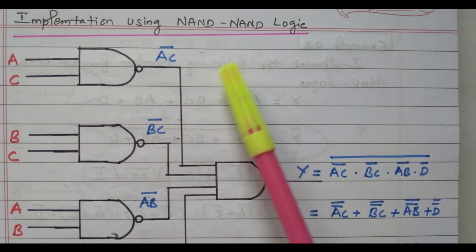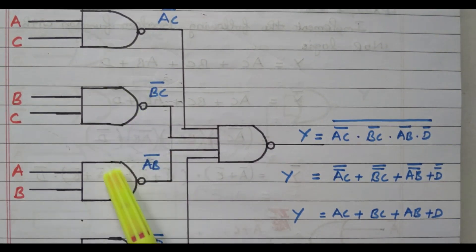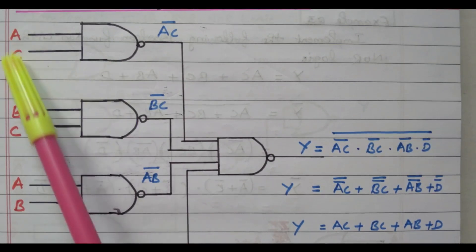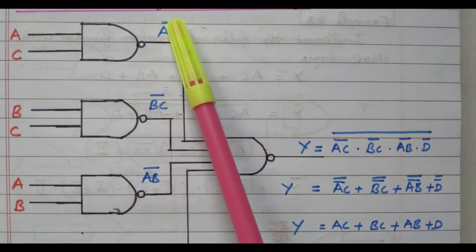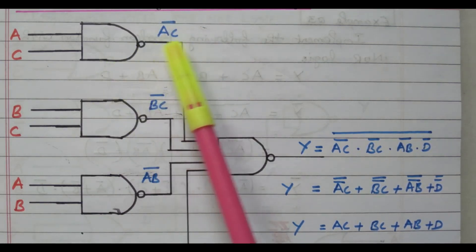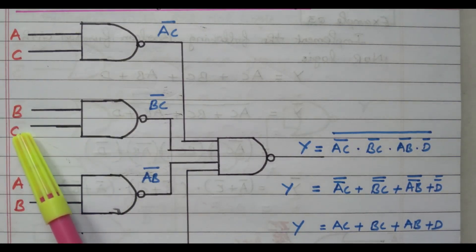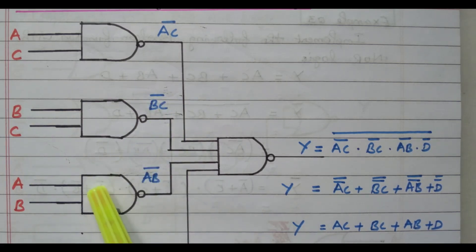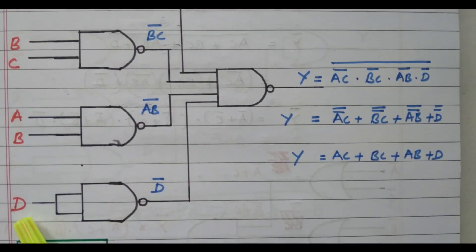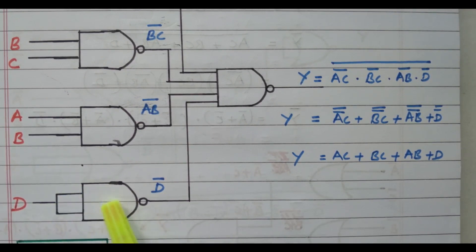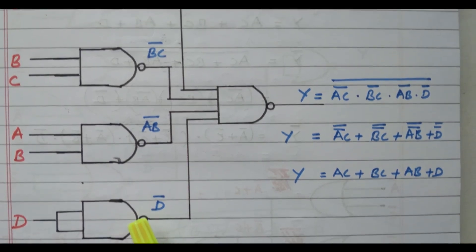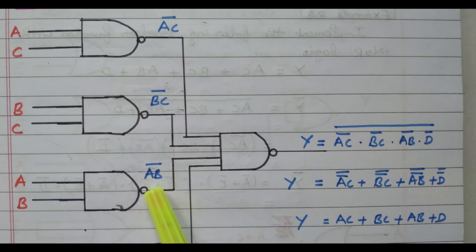Previously we used AND gate and OR gate. In this diagram we have the first three AND gates replaced by NAND gates. The input is A and C; the output of the NAND gate is AC whole bar. Similarly, another NAND gate with input B and C gives output BC whole bar. One more NAND gate with input A and B gives output AB whole bar. D is also given to a NAND gate, but the two inputs are short-circuited, so it acts as a NOT gate — giving D bar. So we now have inputs to the final gate: AC-bar, BC-bar, AB-bar, and D-bar.